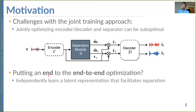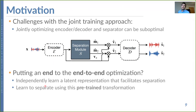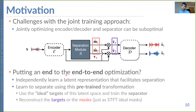What we propose is to independently learn a good latent representation — meaning the encoder and decoder — that facilitates the process of separating sounds. Then we learn how to separate the sources using this pre-trained transformation directly on this latent space, using either the ideal representations of the sources or the masks to train the separation module.